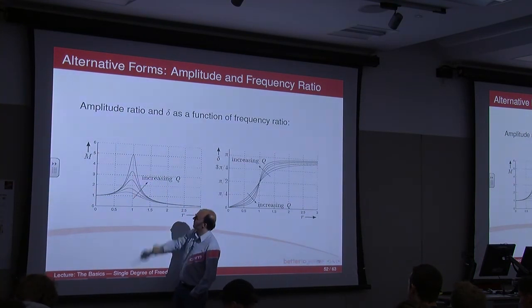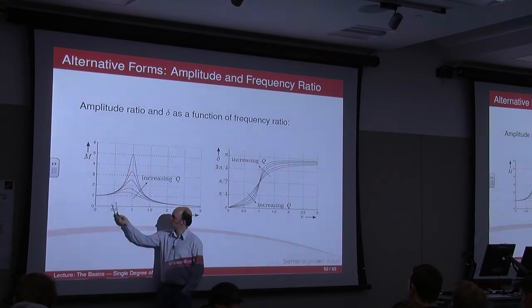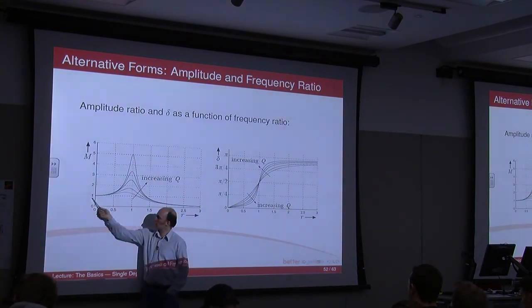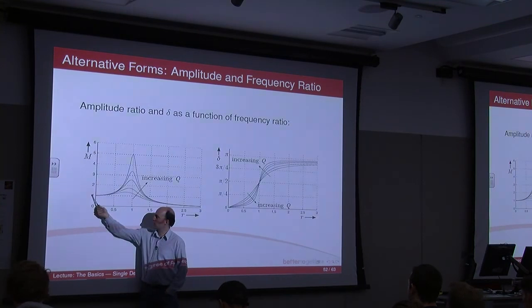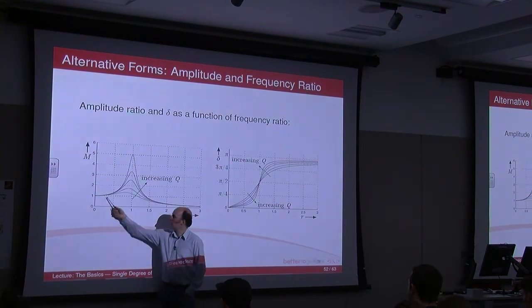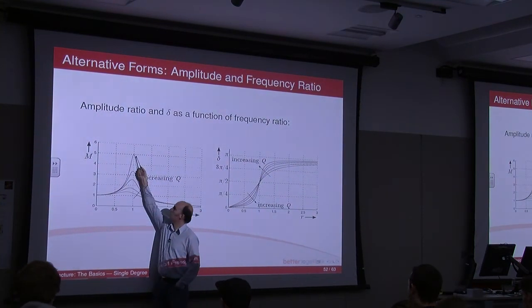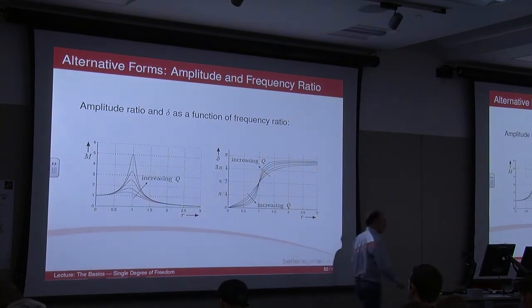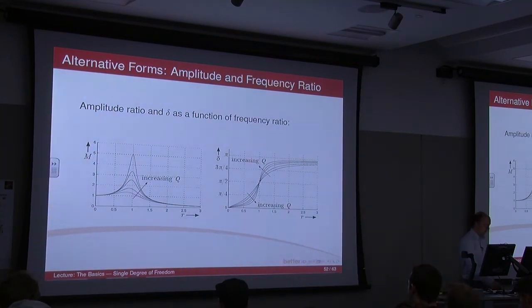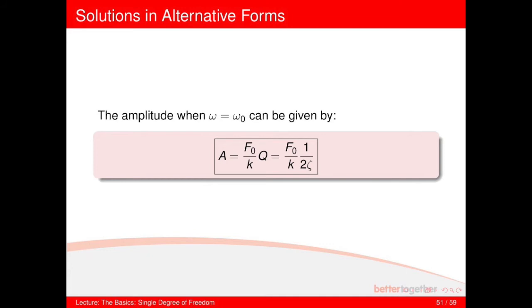So here we've got a Q of about 5. Static amplitude, sorry, the amplitude ratio here is 1. You multiply that by Q, you get up to there. So increasing Q, you get a bigger peak.